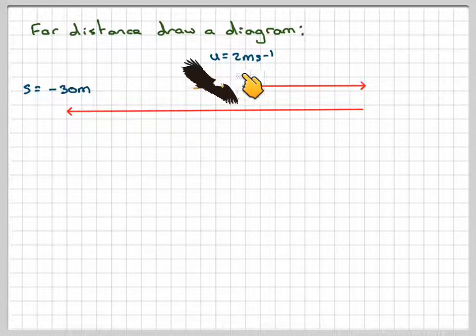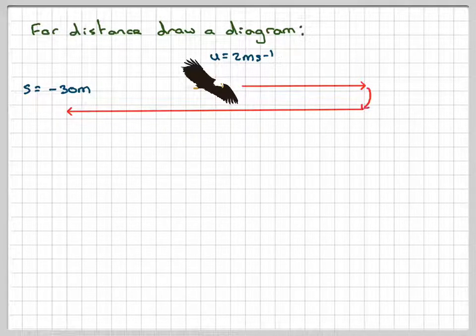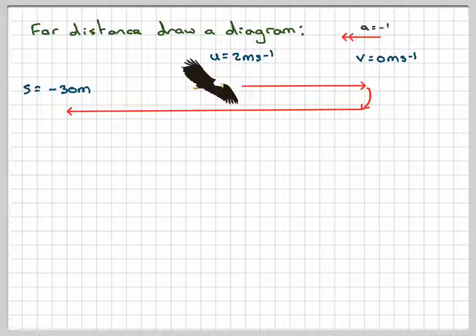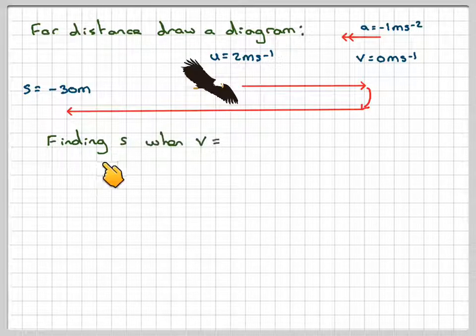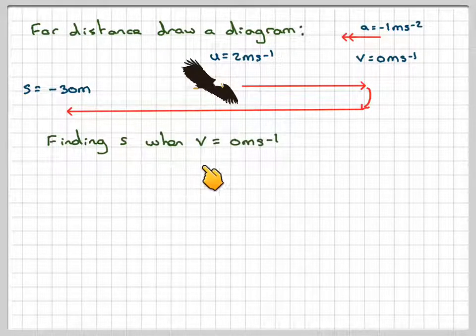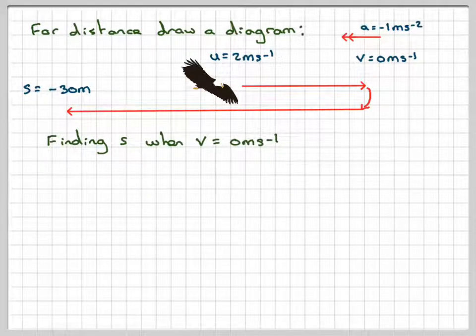So if U is 2 metres per second, at this particular point, the velocity will be equal to 0. The acceleration is acting against the bird. So finding S when V is equal to 0 metres per second. So when we find that, we can do that, and then add that, and then add in 30.